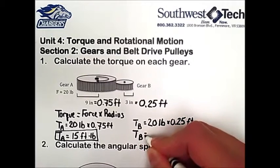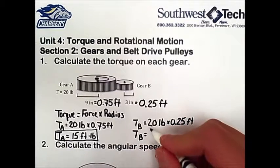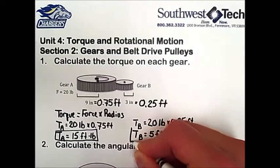So the torque acting on gear B is equal to 5 foot-pounds.